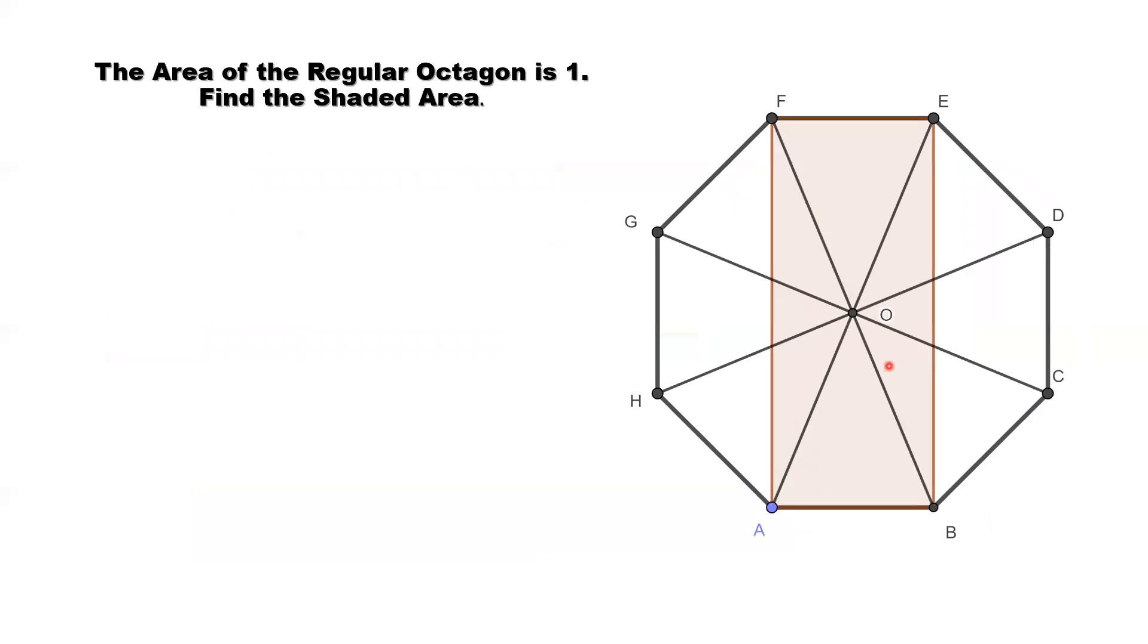There are different ways to solve this question. Here we use the pure geometric method to solve this question. We link the opposite two points. Then, we cut the whole octagon into eight pieces. Each piece has the same area with others.